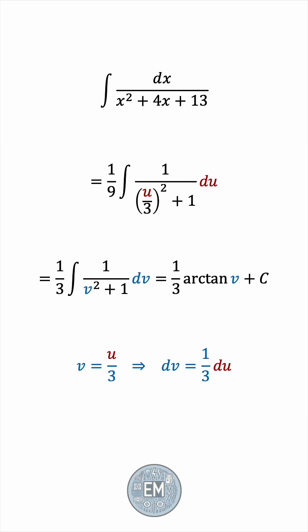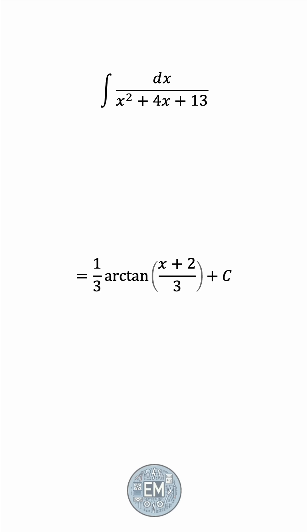Let's resubstitute. v is u over 3. And u in terms of x was x + 2. So resubstituting this, we have an answer in terms of x. So this is the final answer to the original integral we started with.